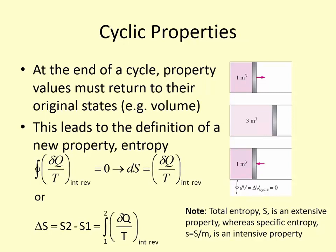At the end of a cycle, properties have to return to their original states — for example, volume will be the same at the end as at the beginning. Noticing that δQ/T showed up repeatedly in derivations, Clausius determined it was a new property called entropy. The definition of entropy is ds = δQ/T, defined this way because entropy is primarily recognized during a process — the entropy changes because something happens to the system.